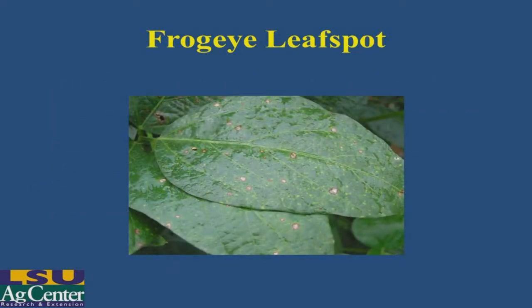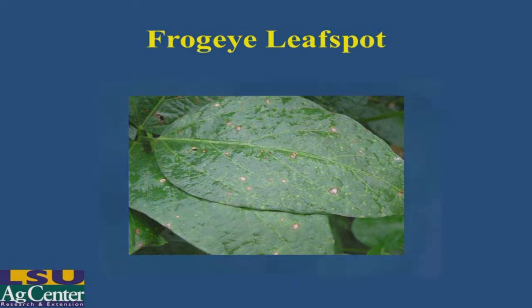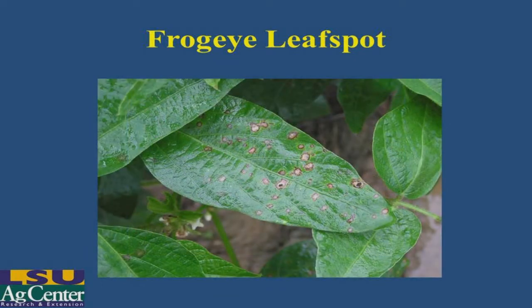These are the early symptoms of the leaf spot — the tiny leaf spot you can see there with the center being gray or tan with a darker brown ring around it. And this is a close-up of some of those lesions that have expanded.